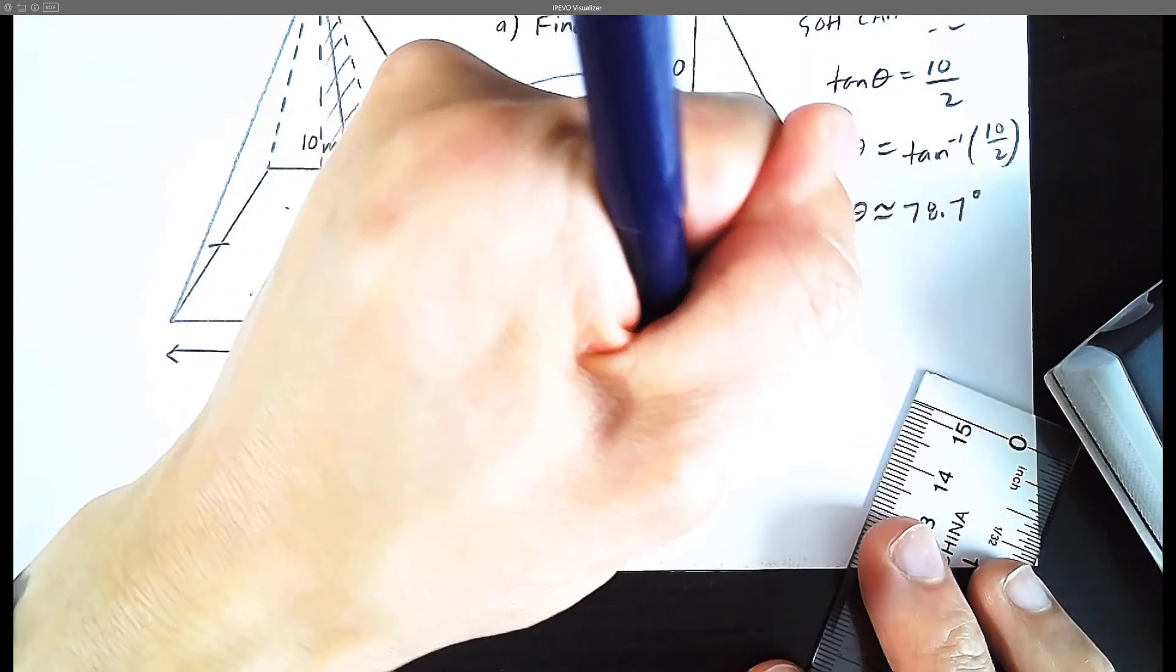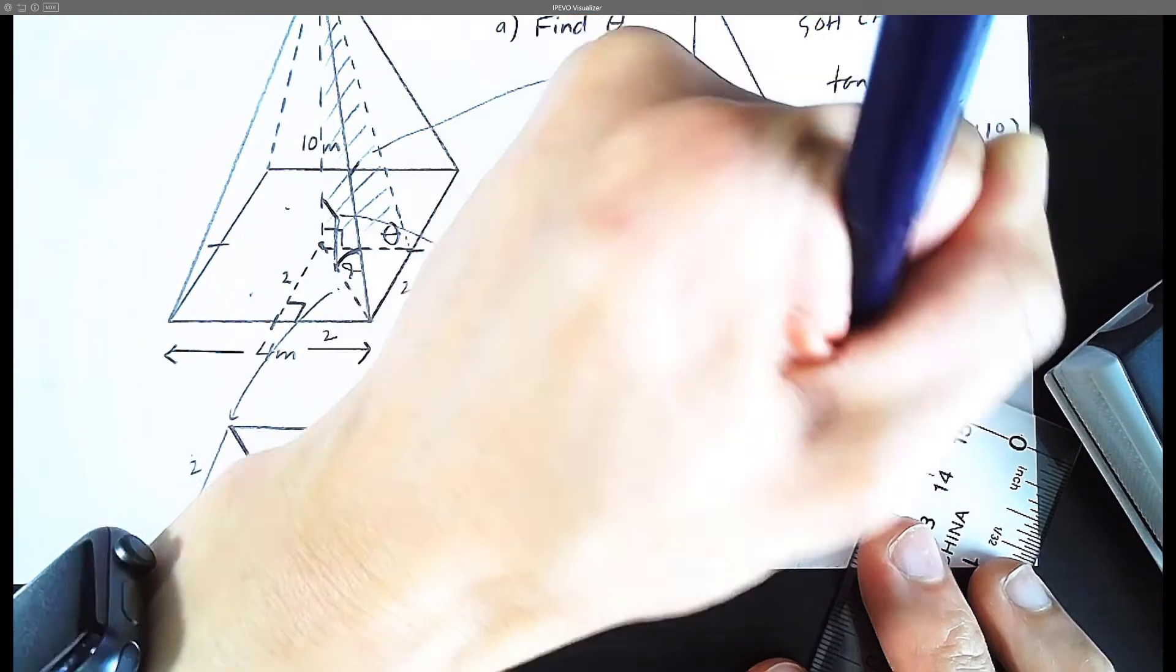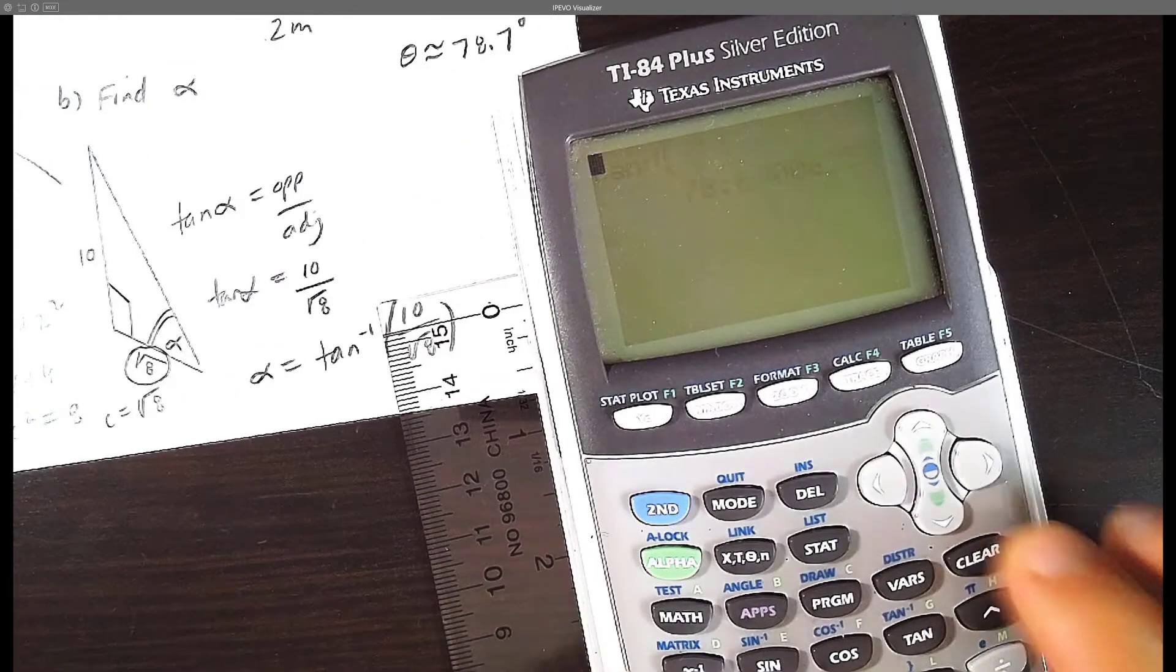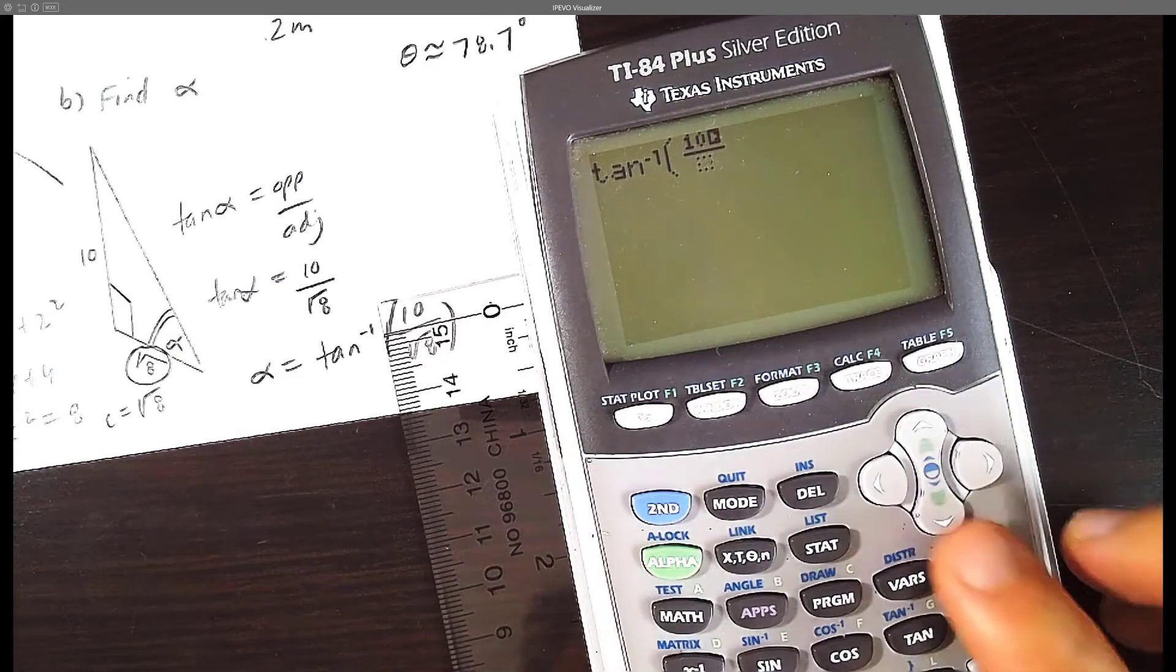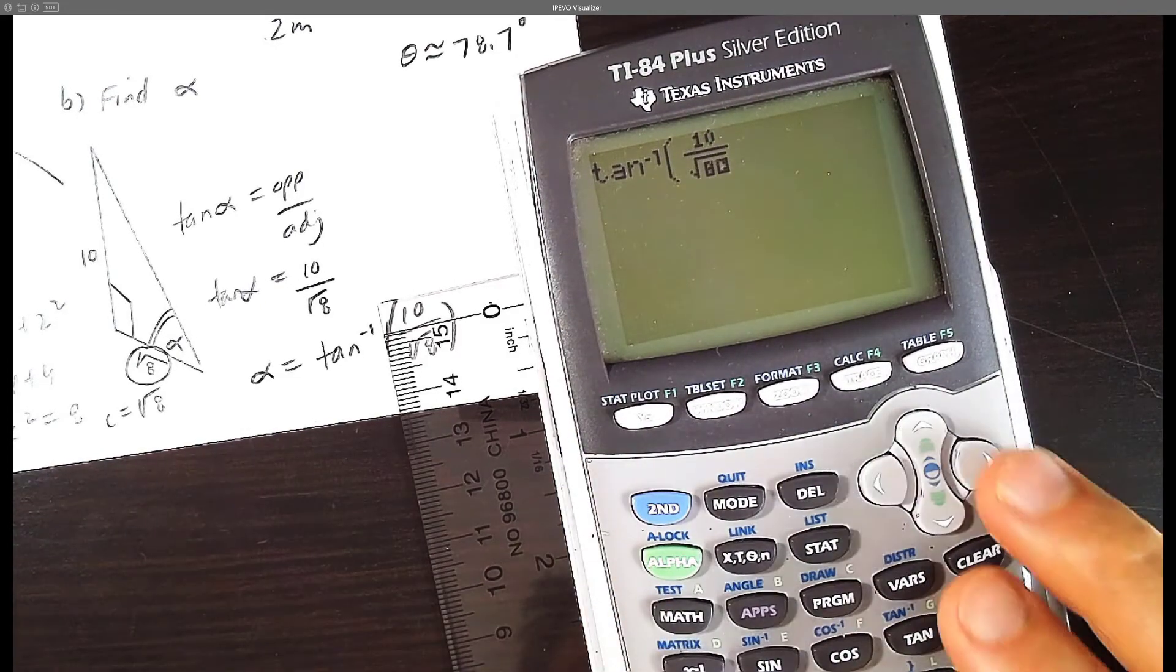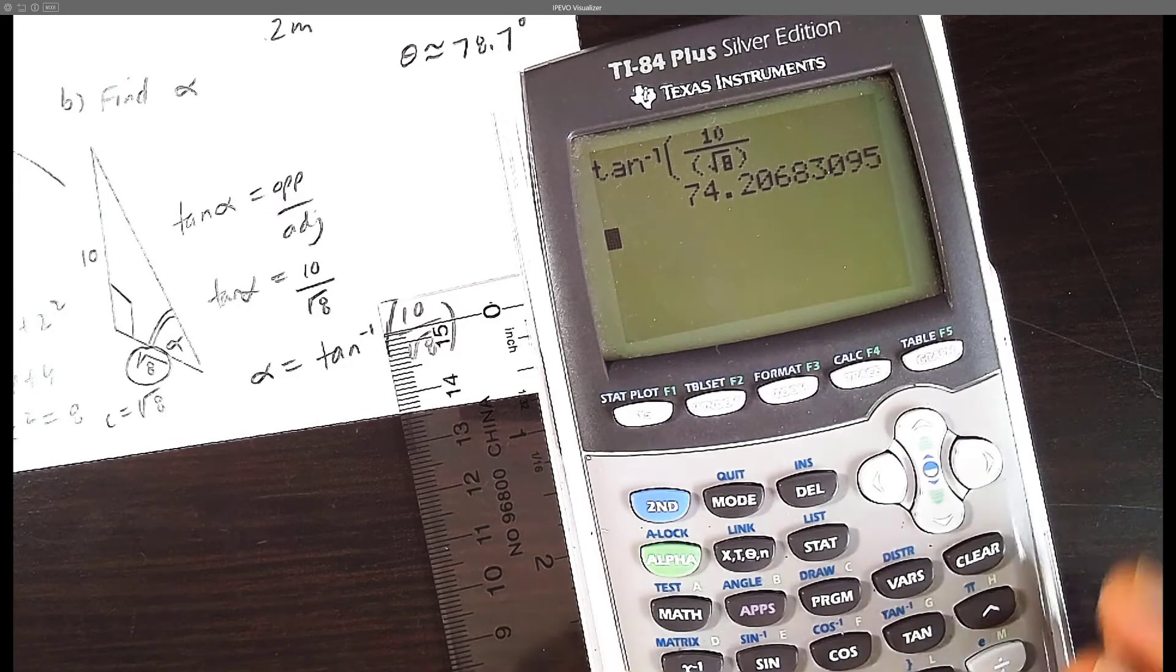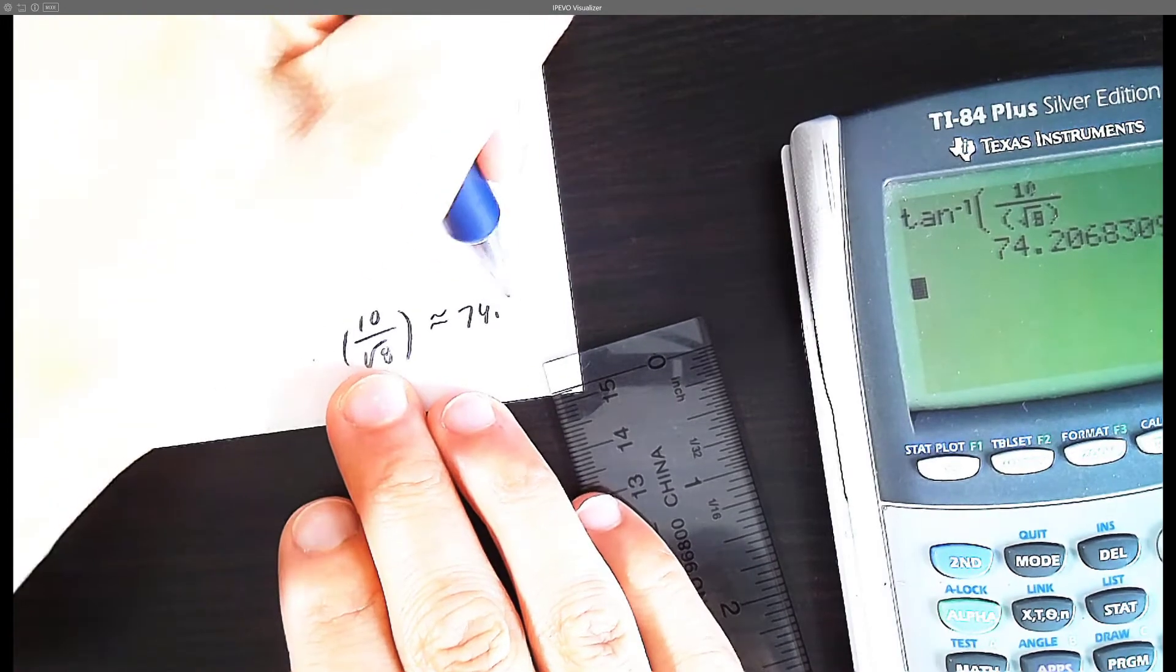How do you figure out alpha? You hit this tan inverse button. Tan inverse of 10 over root 8. Let's figure it out. Tan inverse of 10 over root 8. And the answer is 74.2 degrees. Approximately 74.2 degrees.